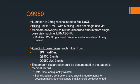A vial of Lumison contains 25 milligrams of lyophilized powder reconstituted with 5 mL of normal saline. Each Q9950 billing unit is 1 mL, so there are 5 billing units per vial. The recommended dose for liver imaging is 1 to 2.4 mL depending on patient size, so the entire vial is not used for most patients. However, Q9950 can be billed for drug that is reconstituted but not administered by using the JW modifier. For example, if 2 mL are administered and 3 mL are discarded, this can be billed as 2 units of Q9950 and 3 units of Q9950-JW.